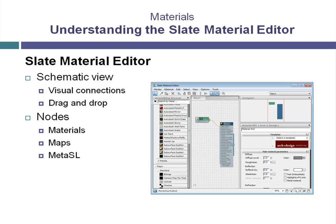Map Nodes provide a way of applying patterns to the surface of objects. They can be bitmaps. For instance, if you have a photograph of a brick pattern, you can use the Bitmap Node to assign that image to a material.